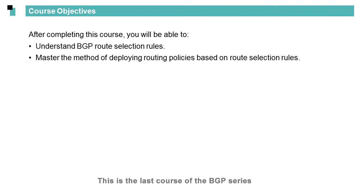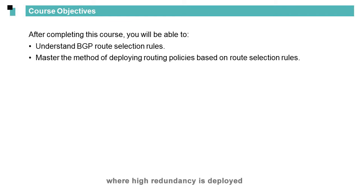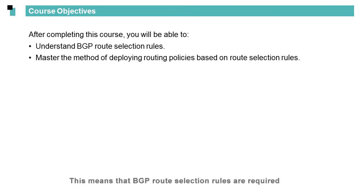This is the last course of the BGP series. BGP is applied to large-scale backbone networks where high redundancy is deployed. Consequently, each router may obtain multiple routes to the same destination from multiple peers. This means that BGP route selection rules are required.